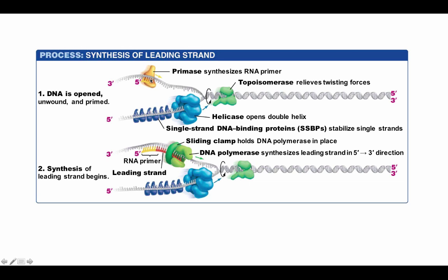For leading strand synthesis: primase synthesizes an RNA primer at the origin of replication, helicase opens up the helix, SSBPs keep strands separated, and topoisomerase relieves tension by cutting, unwinding, and rejoining the DNA. DNA polymerase then uses the primer as a starting point, adds nucleotides to the 3' end continuously, and moves toward the replication fork — simple, continuous, and fast.